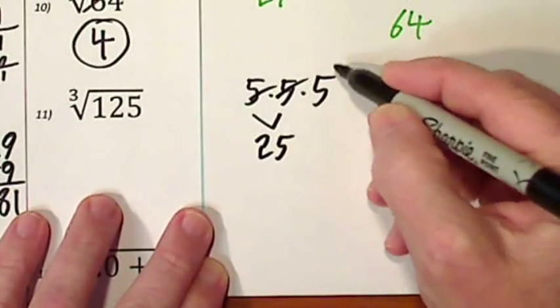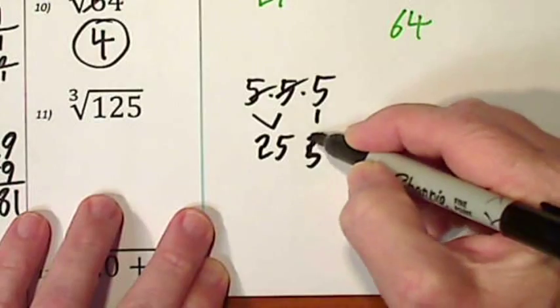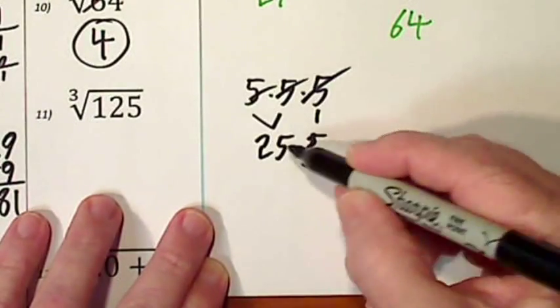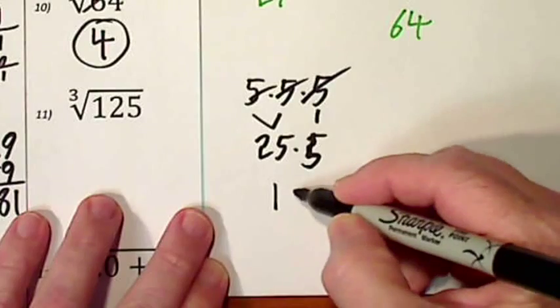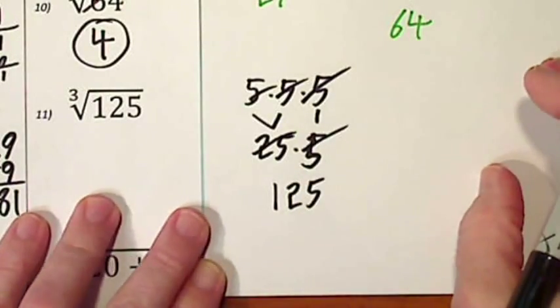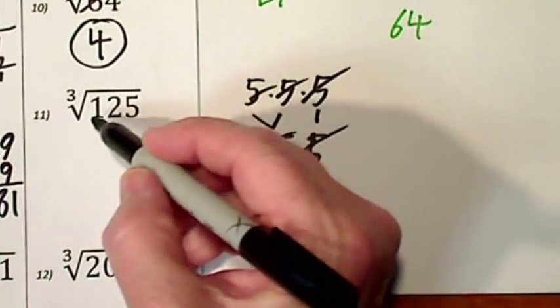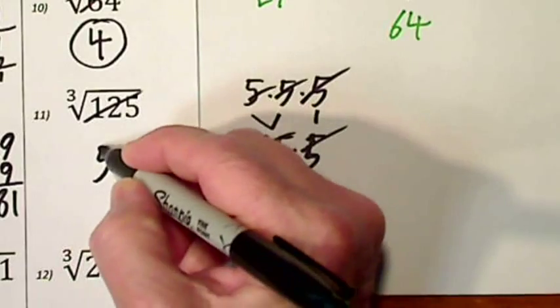Takes care of them. Bring this guy down. And 25 times 5 is 125. Takes care of them. So the cube root of 125 is 5.